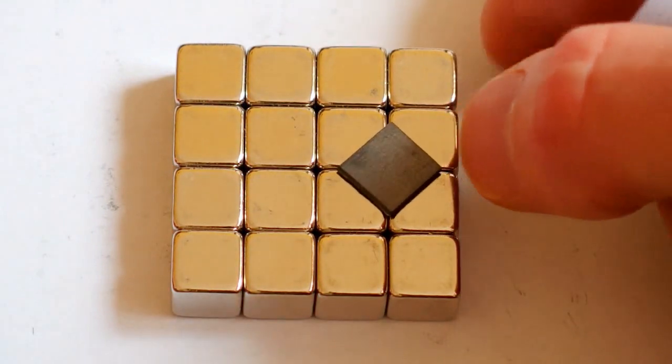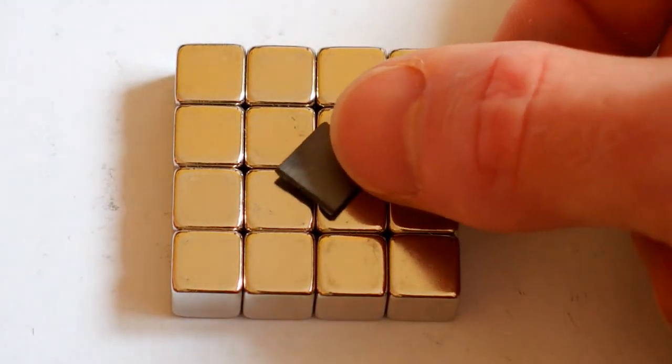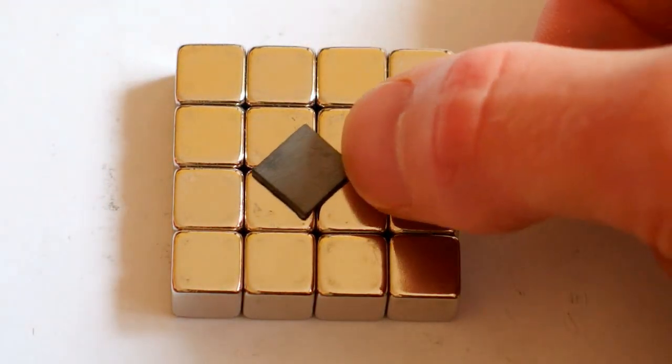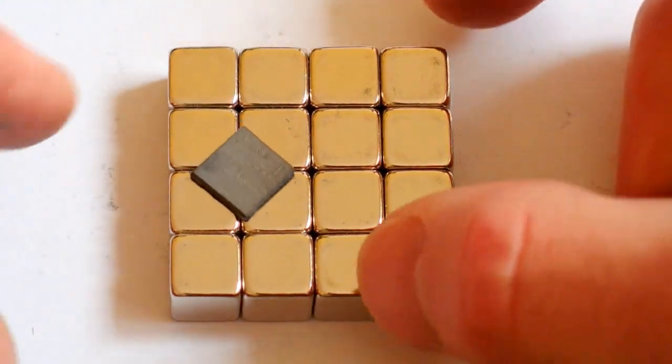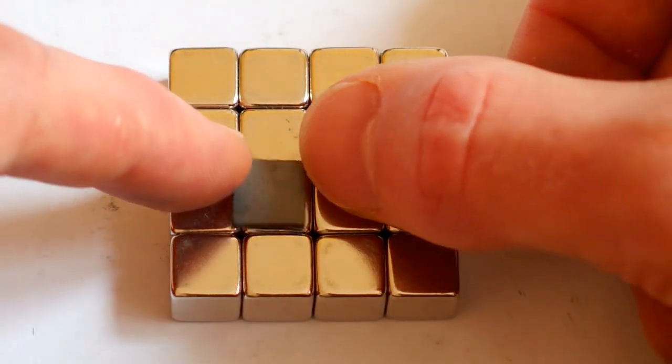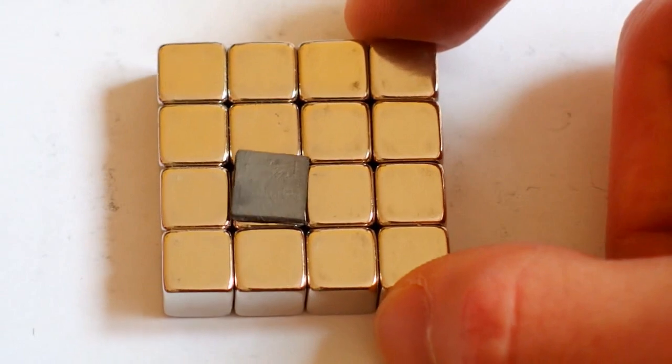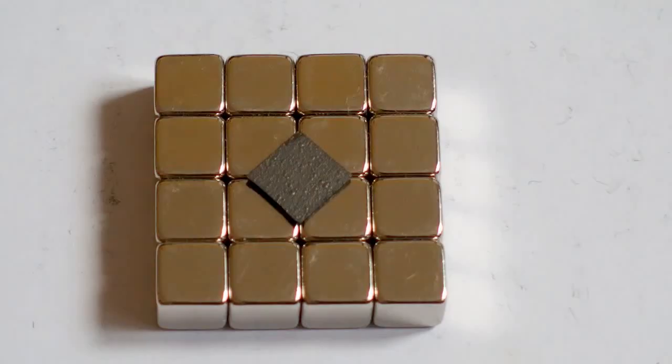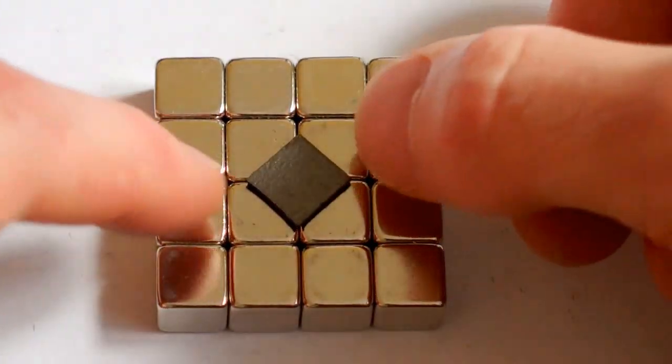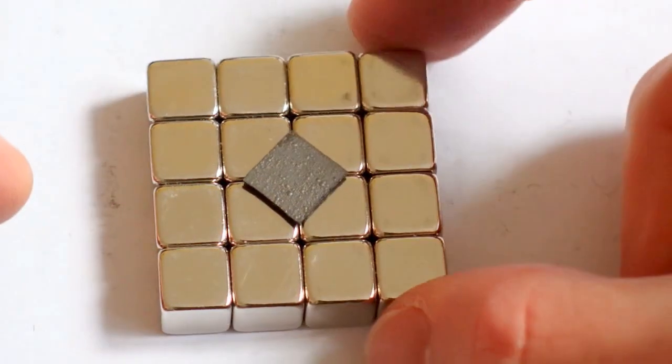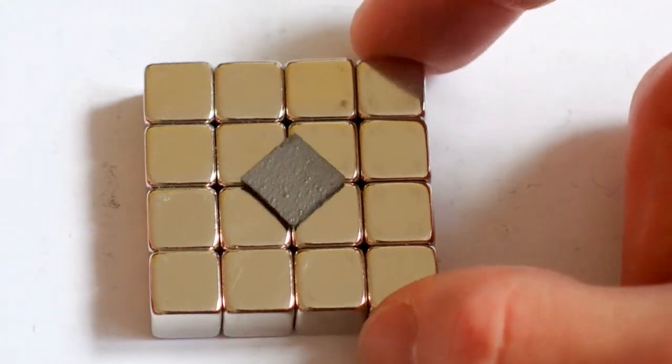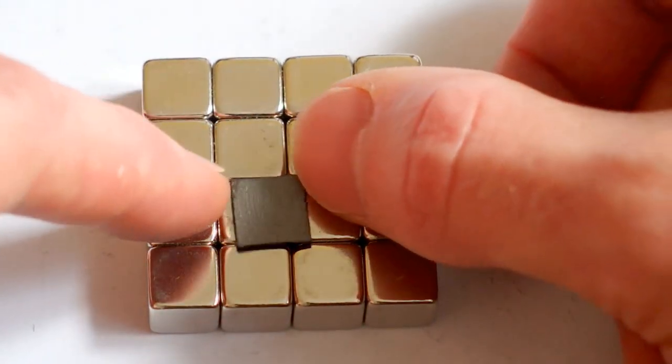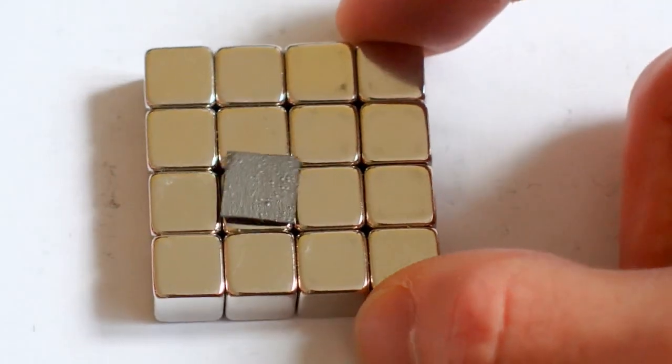It is stable in those diagonal positions, but it also becomes stable like this. So it has two stable positions: the diagonal one over the hole and the one over one of the magnets.